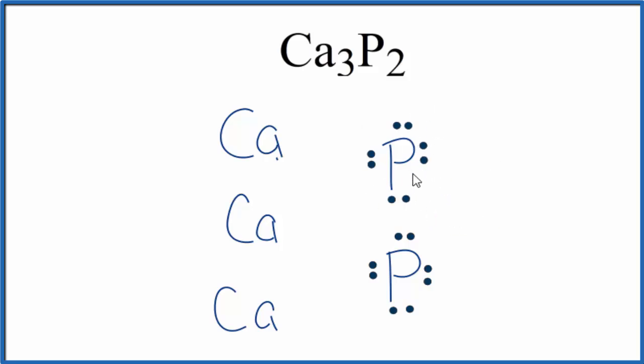And because the phosphorus, each phosphorus gained three valence electrons, electrons are negative, each phosphorus will have a three minus charge. Each calcium lost two electrons, two valence electrons, so each calcium becomes two plus.